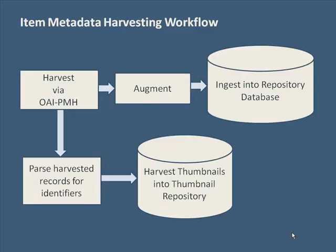We use automated processes to normalize certain values where possible and suppress empty or misused elements. Once augmented, we then rely on another automated process to index the records into our item repository and link them to collection records in the registry.